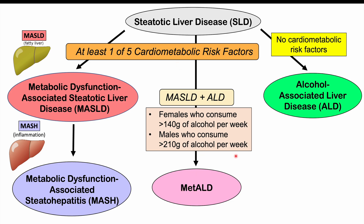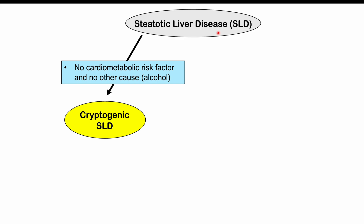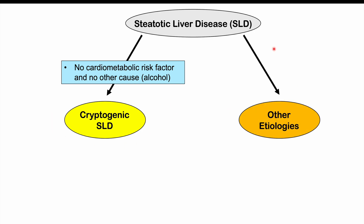If imaging shows hepatic steatosis, we fall into the steatotic liver disease category, then assess cardiometabolic risk factors. With at least one, and heavy alcohol consumption at those thresholds, the diagnosis is MET-ALD. Without heavy alcohol consumption but with at least one cardiometabolic risk factor, the diagnosis is MASLD or potentially MASH. If there are no cardiometabolic risk factors and no alcohol consumption, the diagnosis is cryptogenic SLD. Drug-induced liver injury, or DILI, is another etiology that can fall under the steatotic liver disease category.